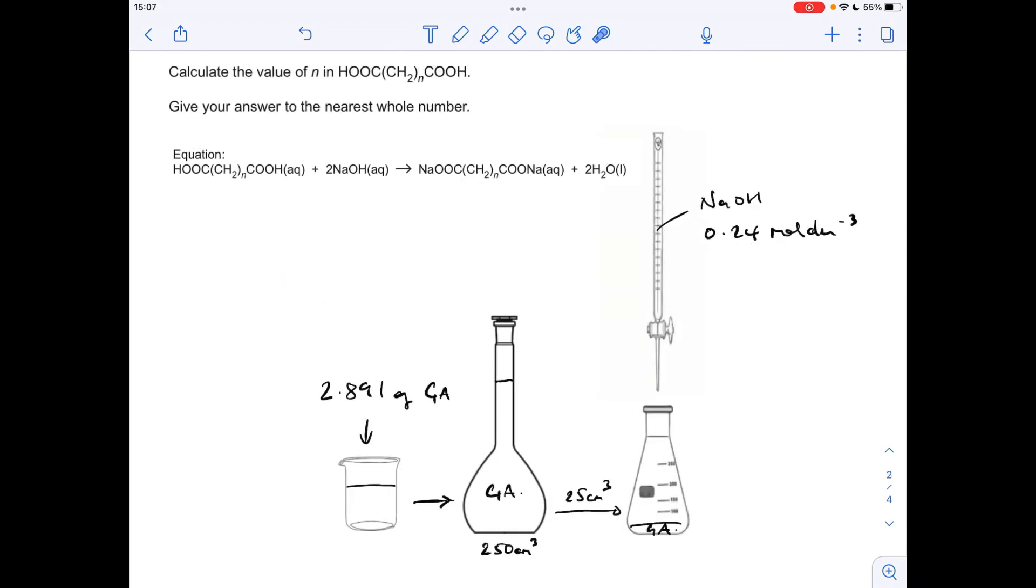So moving on to the main part of the question now, the titration calculation, where we've got to find the value of N in glutaric acid, give it at the nearest whole number. I'm going back to my diagram, and I'll just do the calculation on here. If you think about what we're aiming for in the question or the calculation, if we can calculate the MR of this thing here, we can take off what we do know about it, so it's got these two COOH groups, and then the remaining mass, so obviously the mass of the N lots of CH2, so we can get the value of N from that. So that's the sort of plan of attack.